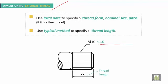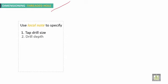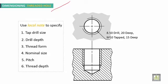For dimensioning a threaded hole, use a local note to specify the tap drill size, drill depth, thread form, nominal size, pitch, and thread depth. For example: 8.5 drill specifies the tap drill size, 20 mm deep is the drill depth, M10 is the nominal size, and 15 mm is the thread depth.